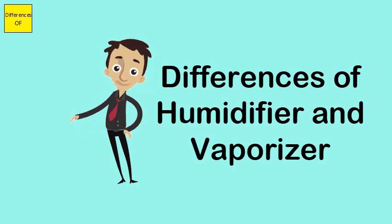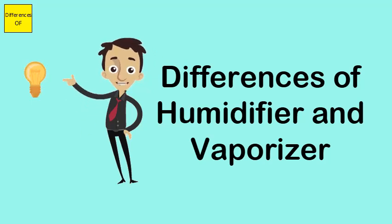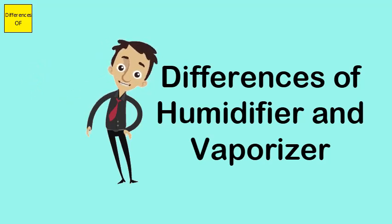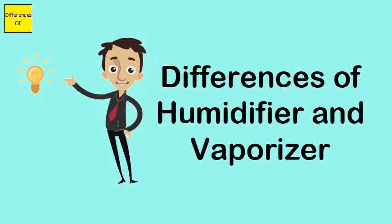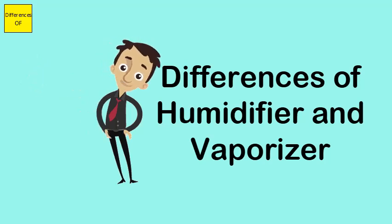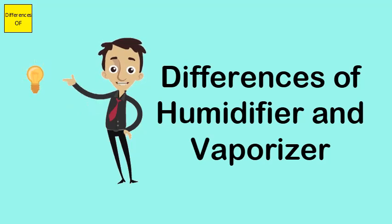A humidifier is more expensive, while a vaporizer is cheaper equipment. A humidifier preferably needs distilled water, whereas a vaporizer can work with tap water as well. A humidifier functions with much noise, while a vaporizer is less noisy.